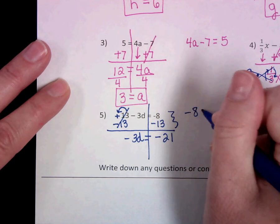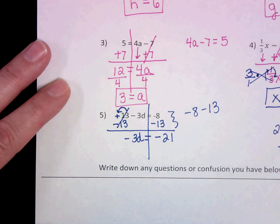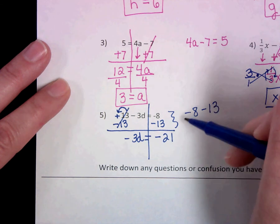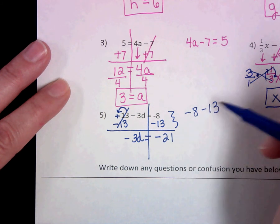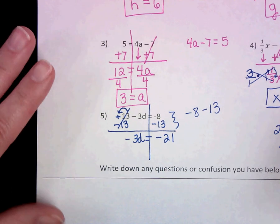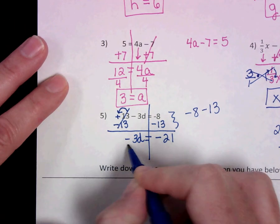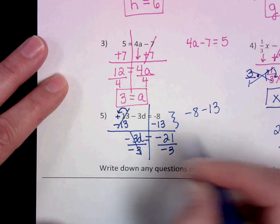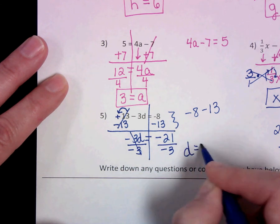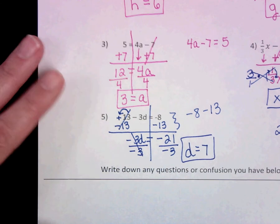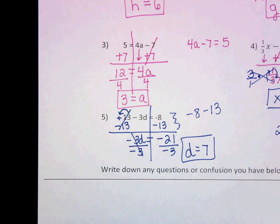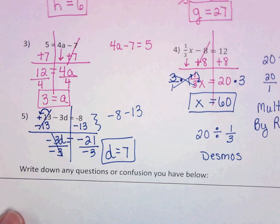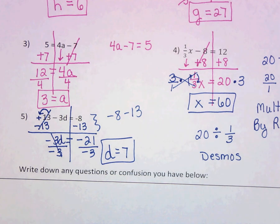So this is negative 3d equals negative 21. One thing we're going to mess up on here is integers. So make sure you're using your calculator to help you. Type in negative 8 minus 13. Okay, and that will help us make sure we're getting it correctly. And then we're going to divide by negative 3, which would give us positive 7. Remember, you can use your calculator. So as you're working with positive and negative numbers, use that calculator to double check yourself.